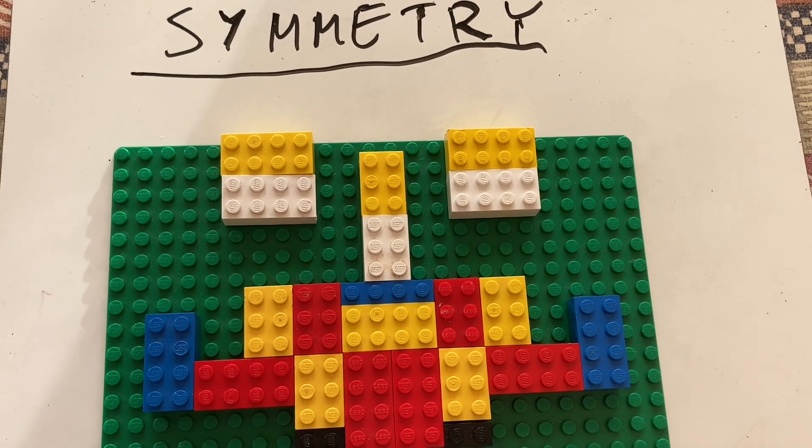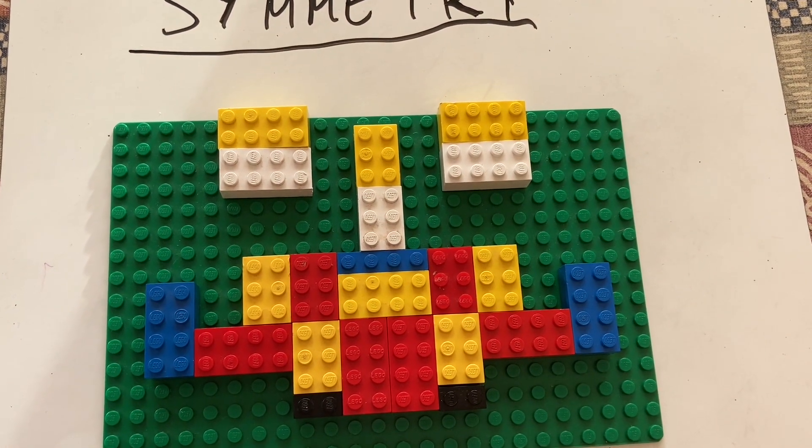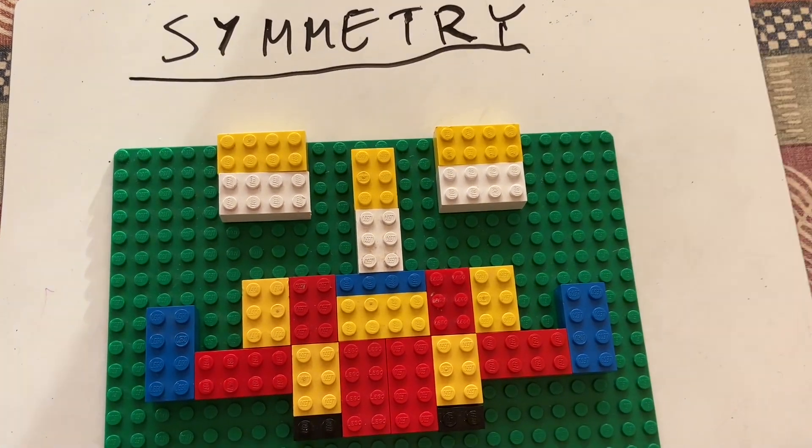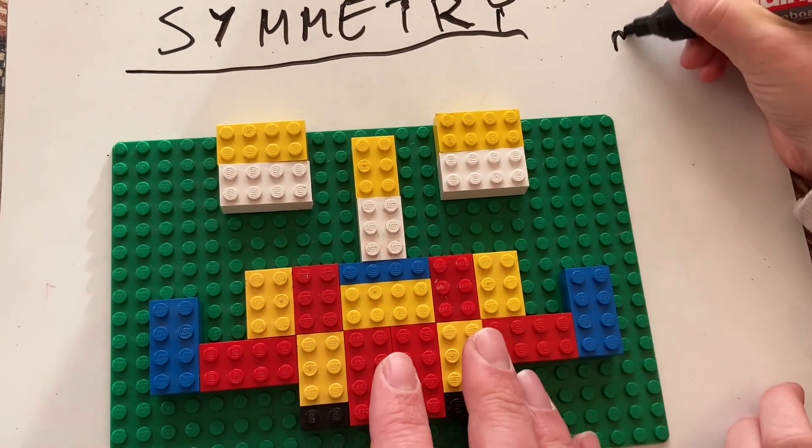So symmetry is where if you have a shape, if it's the same on both sides, then it's symmetrical. On both sides of? The mirror line.